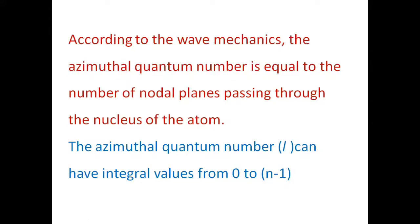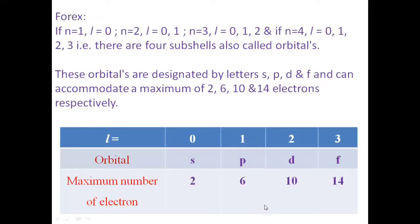The azimuthal quantum number takes integer values from 0 to n minus 1. For example, if n is equal to 1, then L is equal to 0.